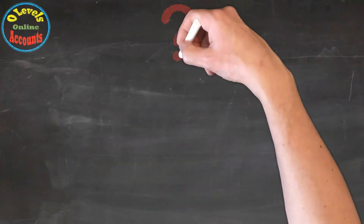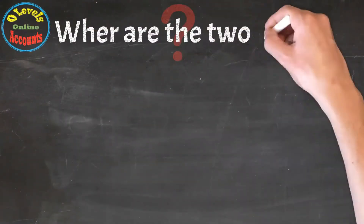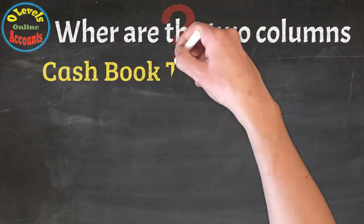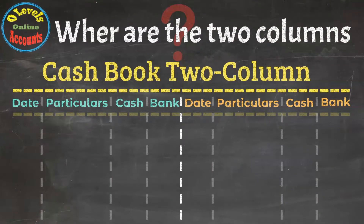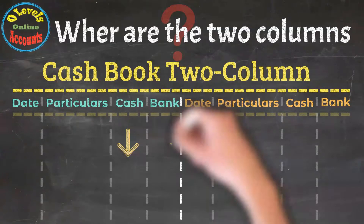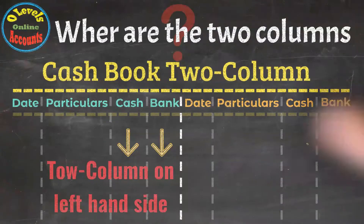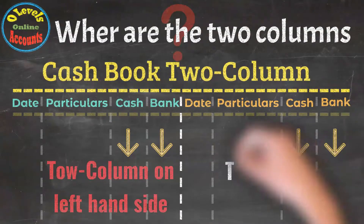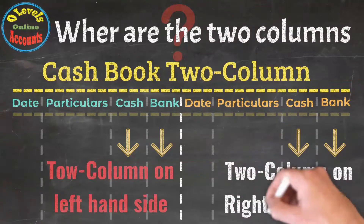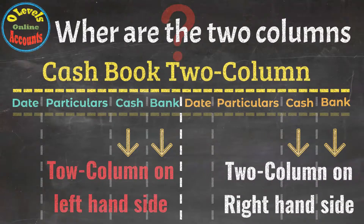By two columns on Cash Book — on every side of the Cash Book, we have two columns: Cash and Bank. One set of both accounts on the right-hand side and one set on the left-hand side. Only Cash and Bank columns are counted in the Cash Book preparation.